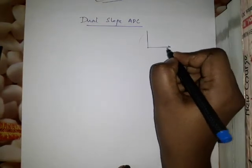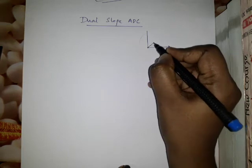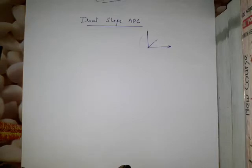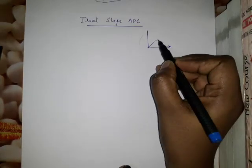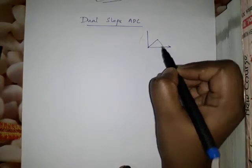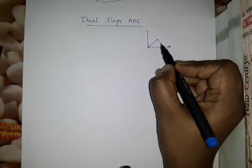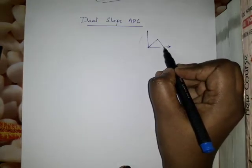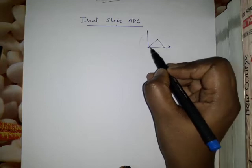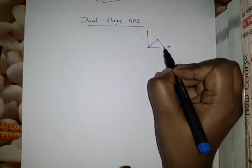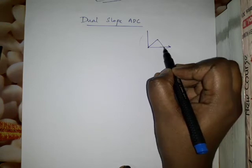In the single slope ADC we use a single slope, but in dual slope we need two slopes. Two slopes means a rising slope and a falling slope. Together, this rising and falling slope forms a triangular waveform.